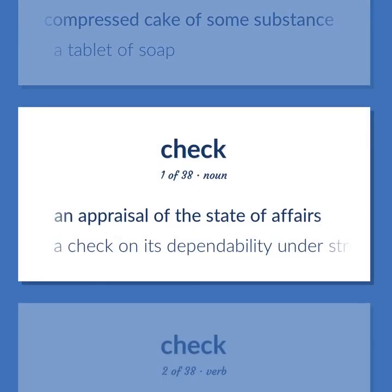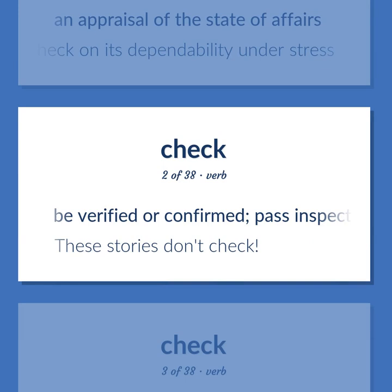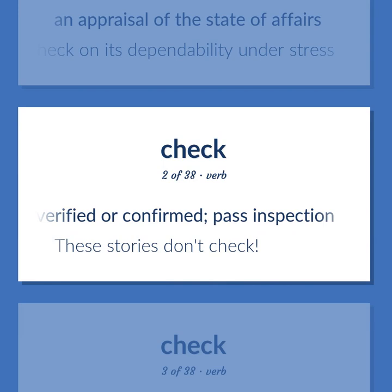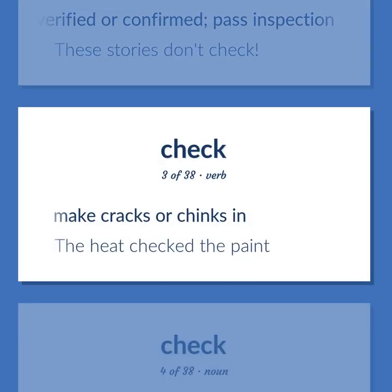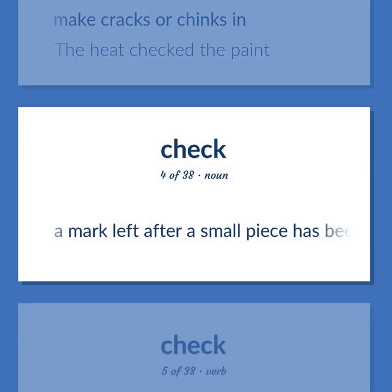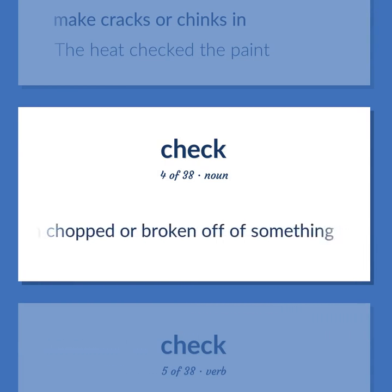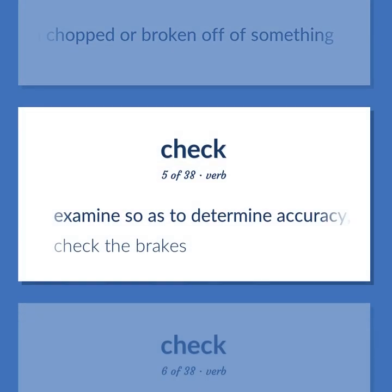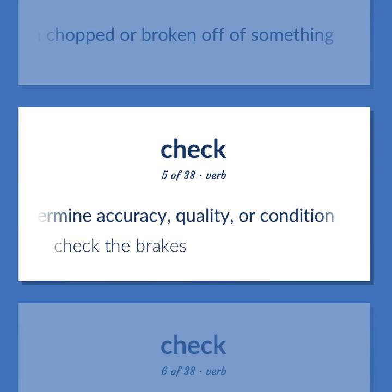CHECK (noun/verb – appraisal/verification): An appraisal of the state of affairs. A check on its dependability under stress. Be verified or confirmed; pass inspection. Example: These stories don't check. Make cracks or chinks in. Example: The heat checked the paint. A mark left after a small piece has been chopped or broken off of something. Examine so as to determine accuracy, quality, or condition. Example: Check the brakes.